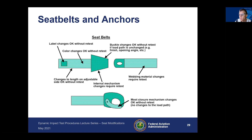Changes in adjustable length are okay without a retest because the adjustable length will be set to the proper location during the test — a little shorter or longer is okay as long as you're within the adjustability needed for your range of occupants. However, if you change the internal mechanism for the buckle, that requires a retest to ensure it does not bind the seat. If you change the webbing material — say from one type of nylon to another or from nylon to polyester — that material change requires a retest. Most changes to the closure mechanism are okay as long as you are not changing the load path.